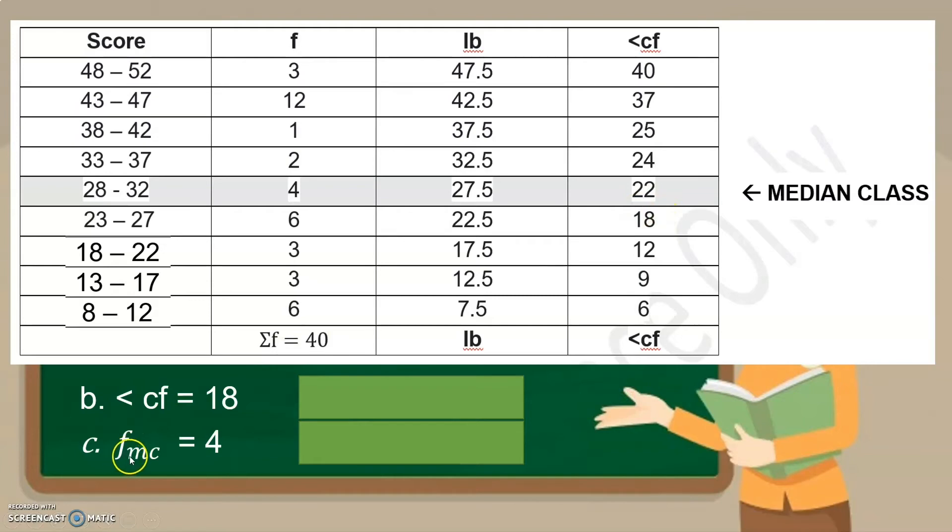Ano naman yung frequency ng median class? O, ito yung F. Ano yung median class natin itong hany na to? Ano yung F nyan? 4. So, kaya 4 yung gagamitin natin. Lower boundary ng median class. Saan tumapat? 27.5. So, ito yung gagamitin natin na LB. And interval, that is 5. Okay.